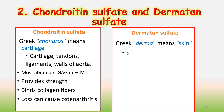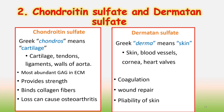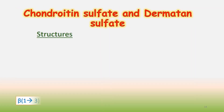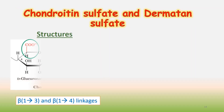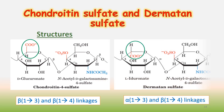The second one is dermatan sulfate. The Greek word derma means skin. Dermatan sulfate is present in skin, blood vessels, cornea, and heart valves. It is involved in coagulation, wound repair, and the flexibility of skin. Chondroitin sulfate shows beta-1,3 and beta-1,4 linkages, while dermatan sulfate shows alpha-1,3 and beta-1,4 linkages.